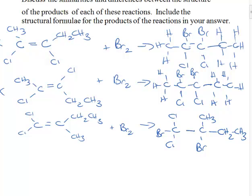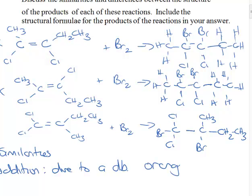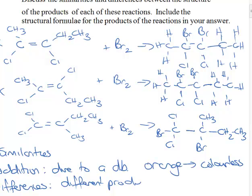So similarities is that they all do addition reactions and that's because of the presence now I'd write this out in full on an exam so the addition would be due to a double bond and the observation would be the same orange to colourless due to the bromine adding across the double bond. The products, the differences of course would be these reactions would be fast in both cases. The difference is that you'd get a different product. Now the two geometrical isomers would give the same product and the normal structural isomer down here this one that would have a different product.